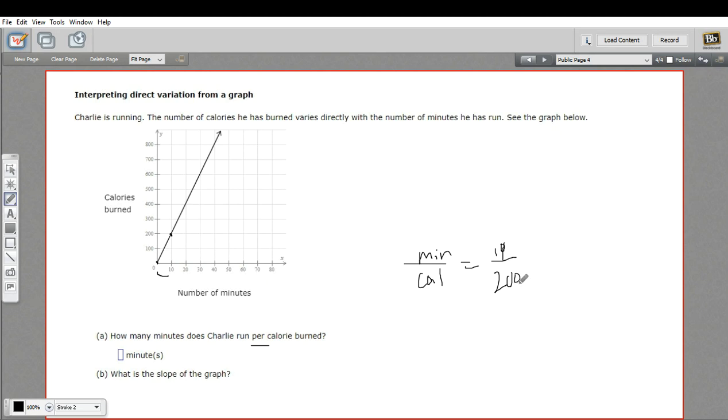And of course, we can simplify this. We can divide both by 10. So we get 1/20th. So it takes 1/20th of a minute to burn a calorie for every calorie. So 1/20th minutes per calorie.